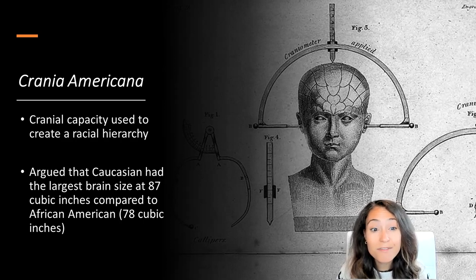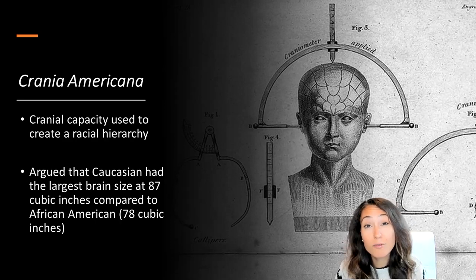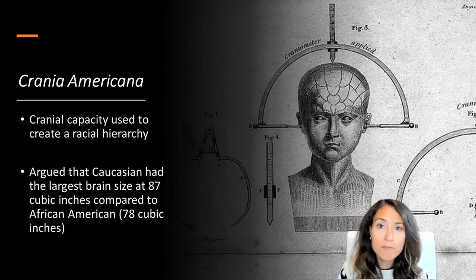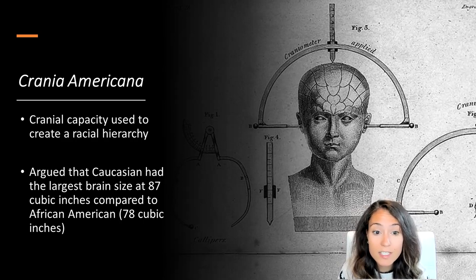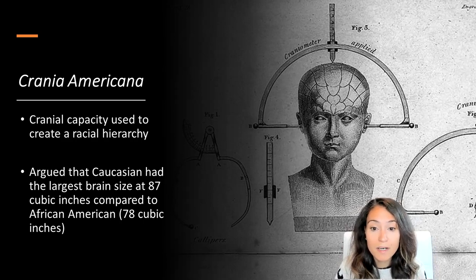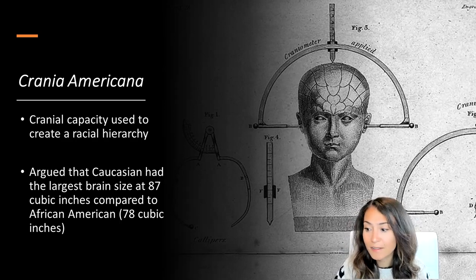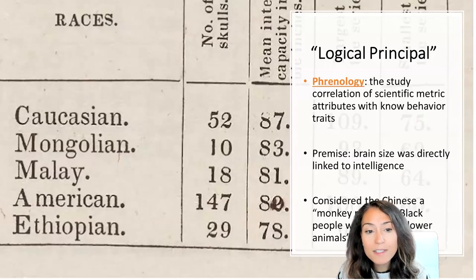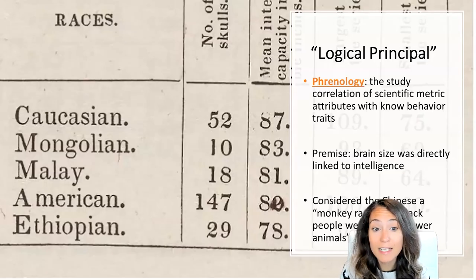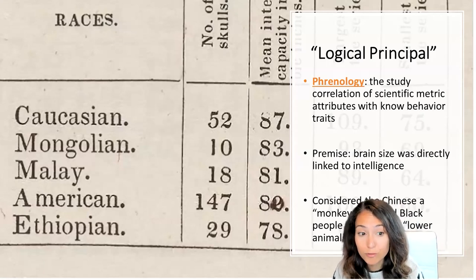Morton's work was really the first attempt to apply scientific rigor to racial science through large sample sizes and replicable measurements. According to his research, Caucasians had the largest brain, followed by Native Americans, followed by people from the African continent. But Morton didn't stop there — he went one step further to correlate cranial size and metric cubic capacity with particular behavioral traits.